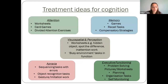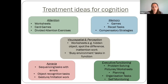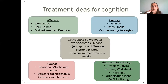For cognition treatment ideas: attention can be addressed through worksheets sent by email prior to sessions, attention card games, and divided attention exercises — giving the patient two tasks simultaneously. Memory can be treated through games and recall tasks, such as giving words at the start of a session to remember and recall later, plus education on compensatory strategies. Executive functioning can be treated with problem-solving worksheets, pictures, organization and planning tasks, money management tasks via video, and self-monitoring tasks. Apraxia can be addressed with sequencing tasks with deliberate errors for the patient to identify, object recognition tasks, and gesture imitation work.